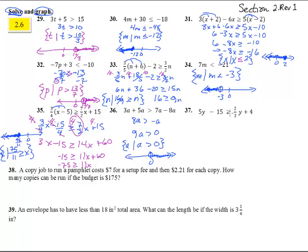Number 37. 5y minus 15 equals 2 thirds greater than or equal to 2 thirds y plus 4. How do we get rid of that fraction? We're going to times through by 3 everywhere. We get 15y minus 45 is greater than or equal to 2y plus 12. Subtract 2y over here. We get 13y minus 45 is greater than or equal to 12. Add 45. We get 13y is greater than or equal to 57. So, y is greater than or equal to 57 thirteenths.